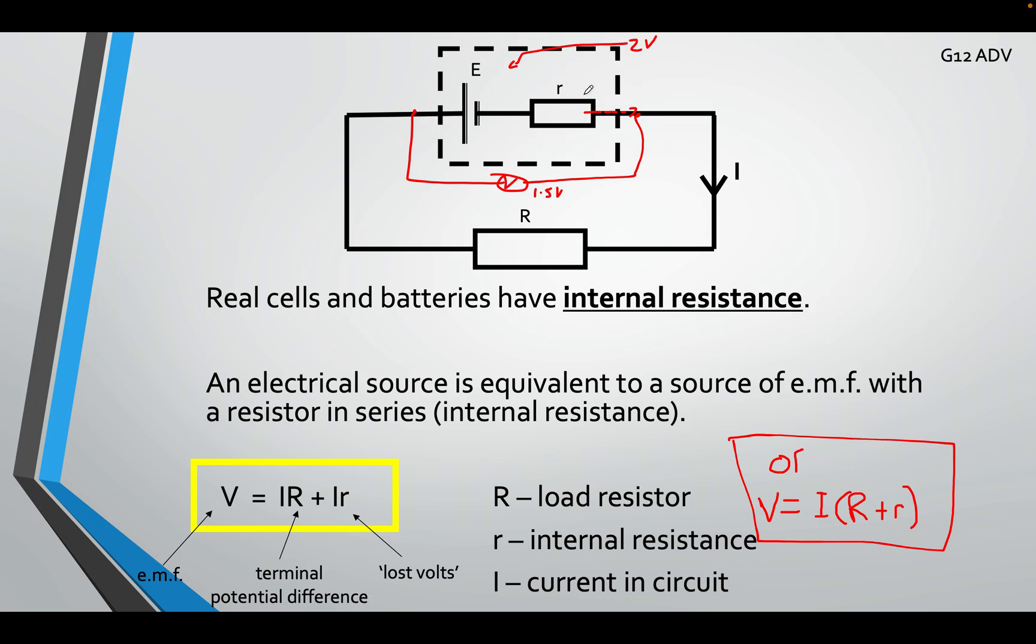That causes the lost volts, the difference of the voltages. So I can figure out what the lost volts was. I can just do 2 minus 1.5, and I lost how much? I lost 0.5 volts. Gone. Energy was used just before I could even get out of the battery.